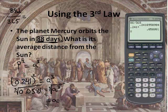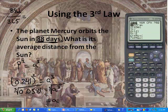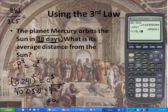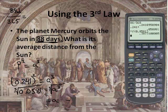The cubed root is a button on your calculator, but it's kind of hidden. You have to click on the math button, and if you look right here, there's the 4 — that's the one I want. The cubed root of 0.0581, close the parentheses, and I get A equal to 0.387 astronomical units.